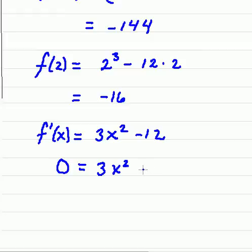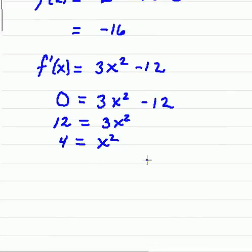So we have 3x² - 12 = 0. And then solving for x, bringing the 12 over, we have 12 = 3x². And then dividing both sides by 3, we end up with 4 = x². Therefore, x = ±2.